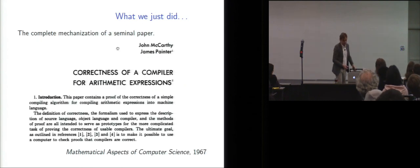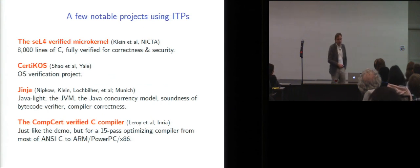And actually what we just did is actually the complete mechanization of a seminal paper by John McCarthy and James Painter. It was the first paper that introduced the idea that there is something to be proved mathematically about the correctness of compilers. So it feels good to be able to do that on machine in fairly short development. So in my remaining five minutes, just let me tell you a few words about, well, give you some examples of notable projects in programming languages that use interactive theorem provers. There are many others. OK, these are just representative examples.